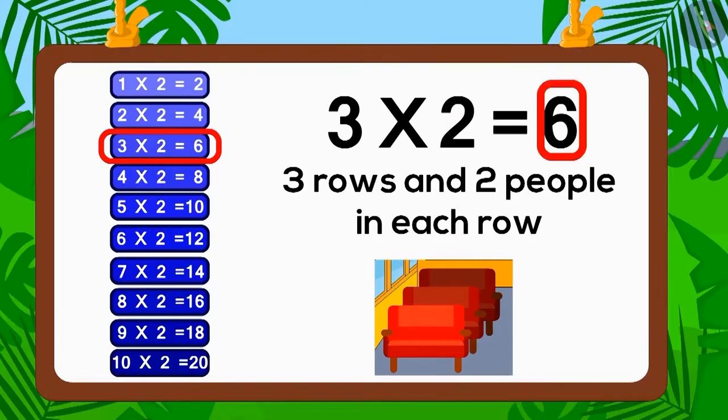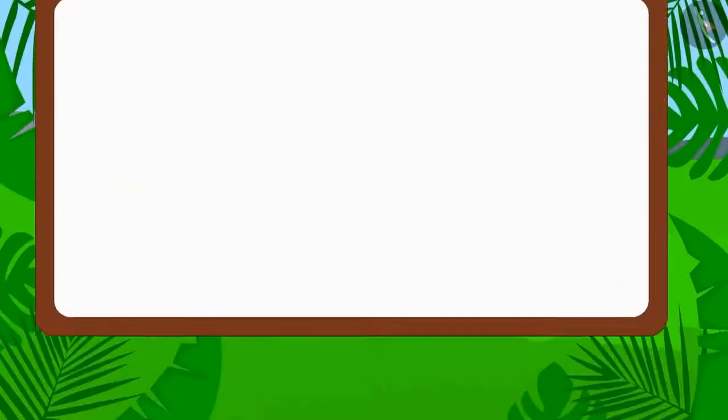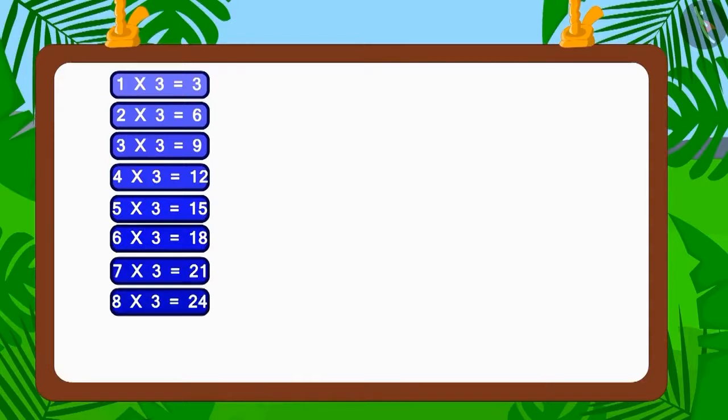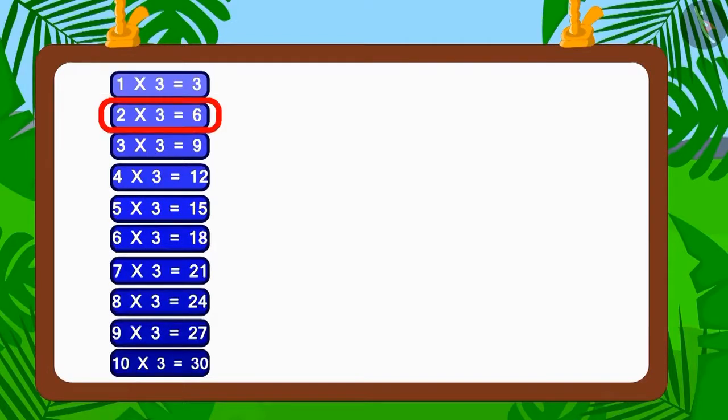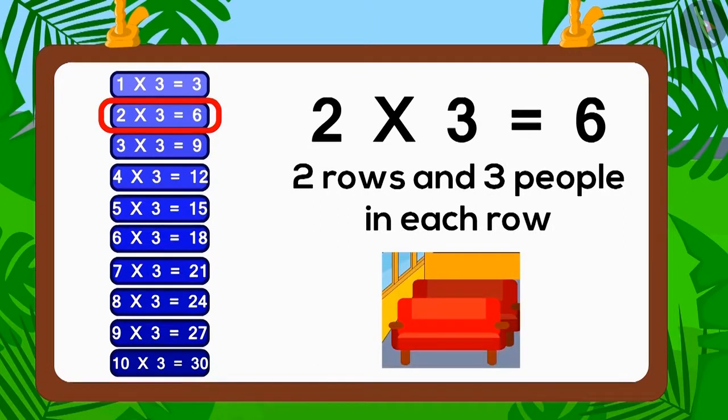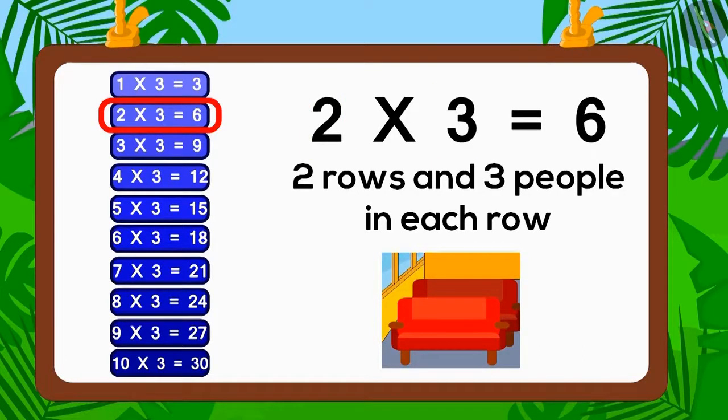Now let's look at the table of three. Does the number six appear in the table of three? Two times three is six. Therefore, three is the factor of six. So if three people sit in each of two rows, how many people in total would be sitting on the bus?